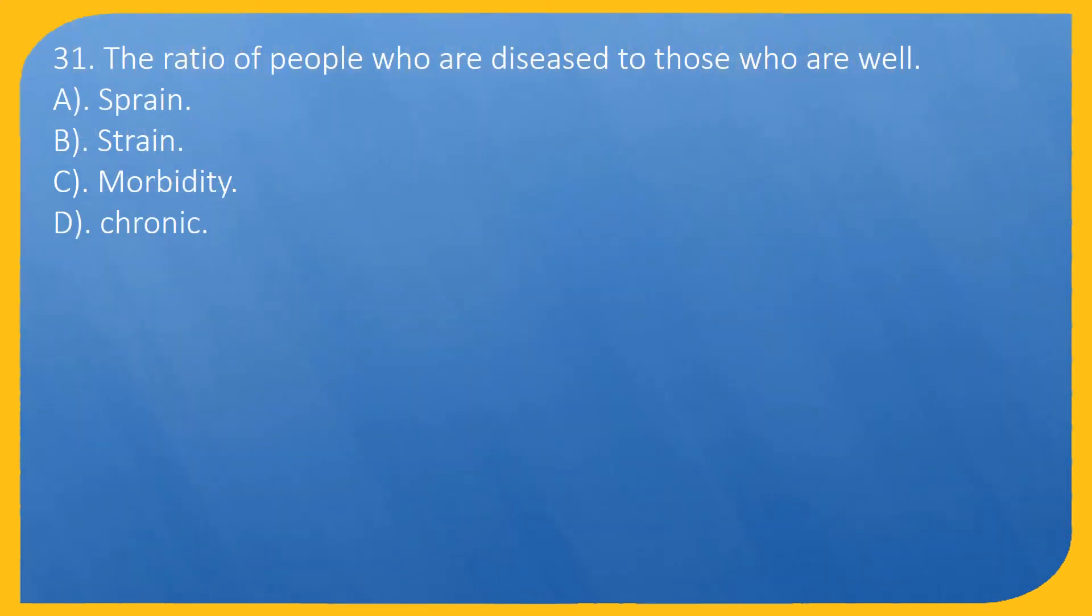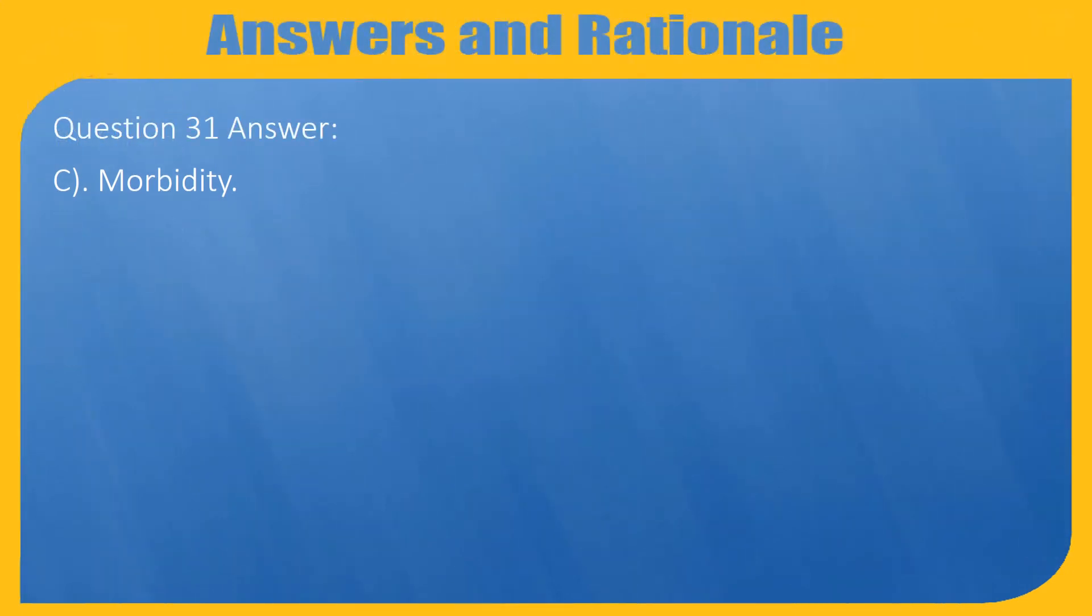Question 31. The ratio of people who are diseased to those who are well: A. Sprain, B. Strain, C. Morbidity, D. Chronic. Question 31 Answer: C. Morbidity.